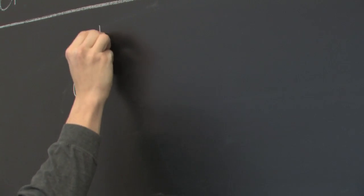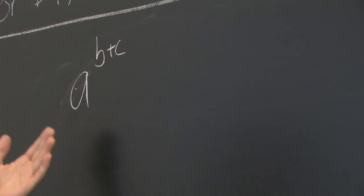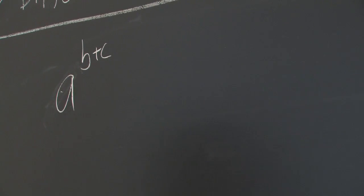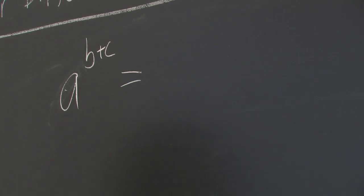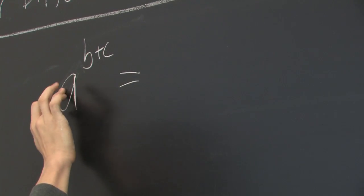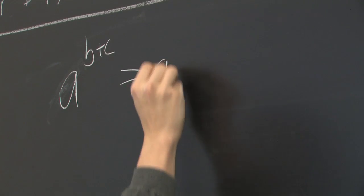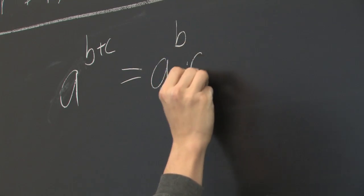For example, let's say we've got a to the b plus c power, where perhaps a is a number, b and c are other numbers, or perhaps one of them is a variable. This is equivalent to a to the b times a to the c.